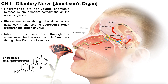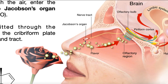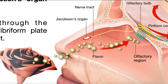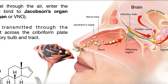Here's an example of a pheromone: estrotetraenol. If you've seen the chemical structure of estradiol — the major female estrogen — this compound is very similar; it's derived from a similar metabolic pathway. Pheromones are released by apocrine glands, and from that secretion they can become airborne, travel through the air, and enter an organism's nasal cavity. They bind to receptors in Jacobson's organ and transmit information through the vomeronasal tract — also called Jacobson's tract — all the way into the olfactory bulb. Even though Jacobson's organ exists separately from the olfactory epithelium, they still converge into the same structure: the olfactory bulb.